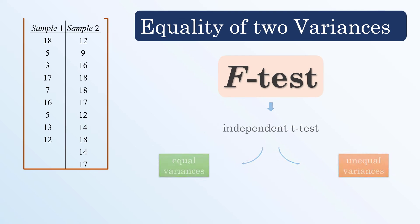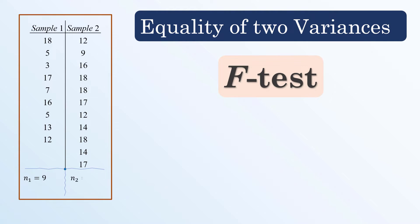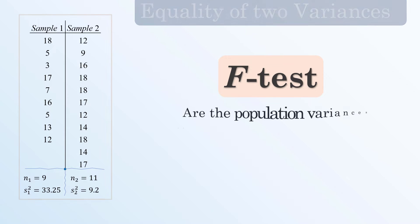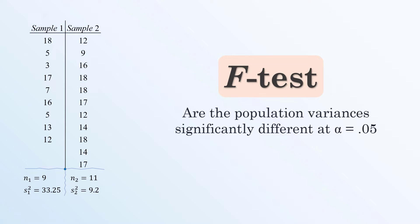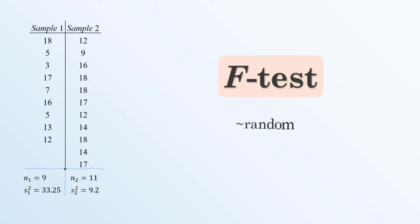Given this sample data, we conduct an F-test to determine if the population variances are significantly different at alpha equals 0.05. The required condition is that the samples are randomly selected from independent and normal populations.